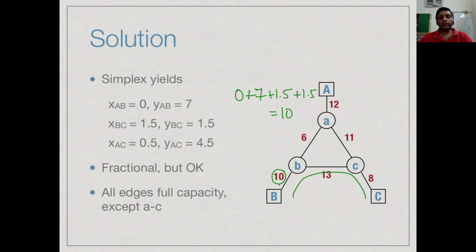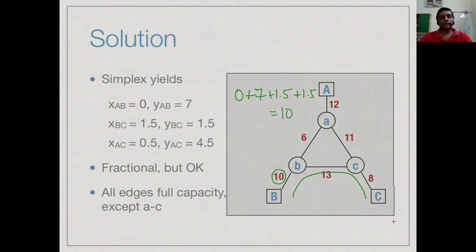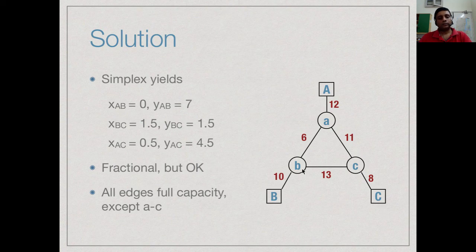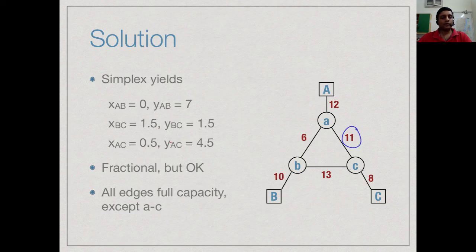Therefore, this link has a total capacity of 10 and all 10 units are being utilized given the combination that it takes. In this way, you can try for each link and find out that everything except this link of 11 is actually saturated by this flow.